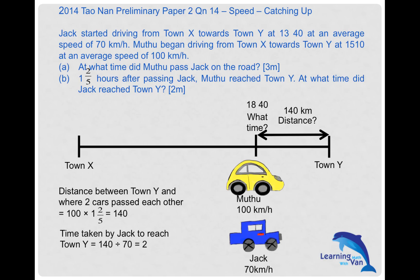The time taken by Jack to reach Town Y would be 140 divided by 70, which equals 2 hours. Two hours after 1840 is 2040 — that's the answer. In catching-up problems, always use the difference in speed since both are still traveling. That's it! Continue practicing and overcome whatever fear you have towards math — it's not difficult. Have a nice day!